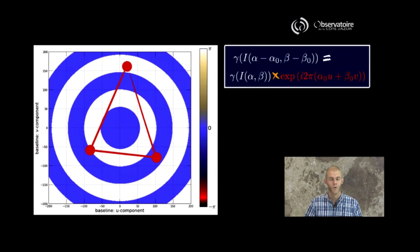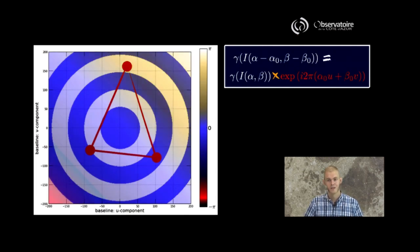what that ends up producing is multiplying the visibility function by some complex exponential function, which means that because a complex exponential is of modulus 1, that's not going to introduce any signature on the visibility modulus, but that is actually going to induce some overall structure of the phase sampled in the UV plane.